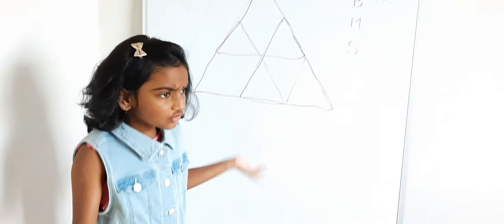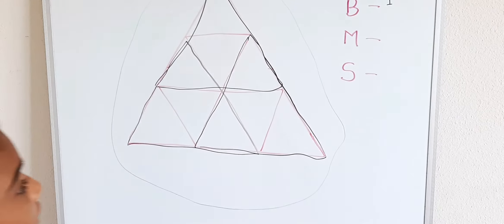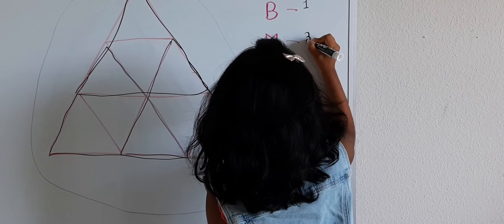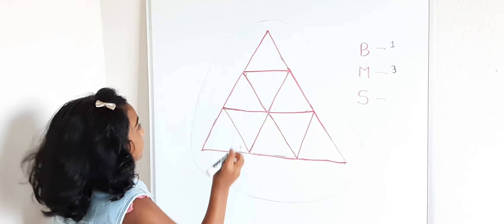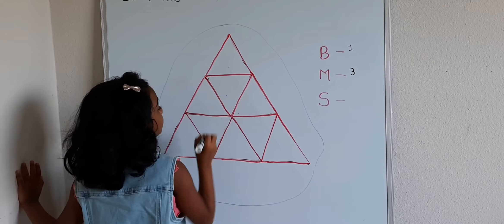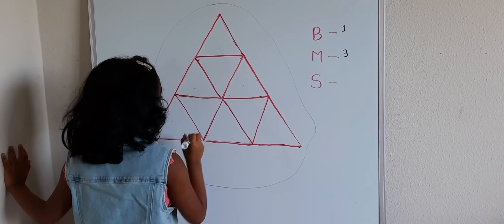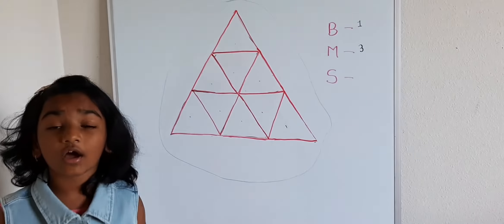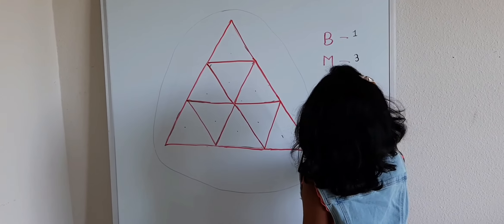How many triangles are there now? You found the answer — three. So we are going to write three right here. Three. Now, how many smallest triangles are there? Let's count: one, two, three, four, five, six, seven, eight, nine. There are nine triangles. We're going to write nine.